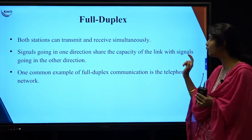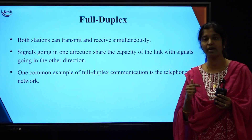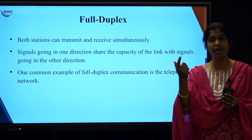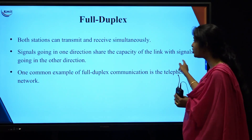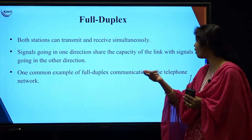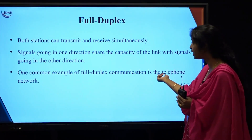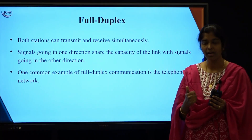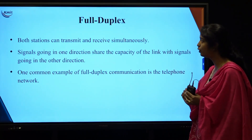The last is full duplex transmission. In full duplex, both stations can transmit simultaneously — device one can send and receive, and device two can also send and receive. The signal capacity is shared by both devices, with signals going in one direction sharing the capacity of the link with signals going in the other direction. The best example of full duplex is the telephone network, where both devices can transmit data at the same time.